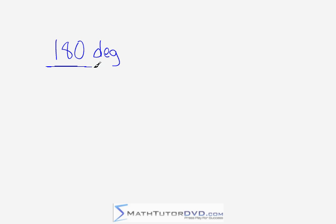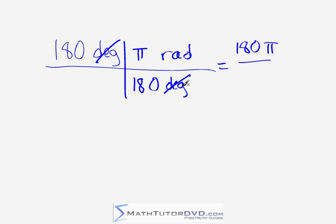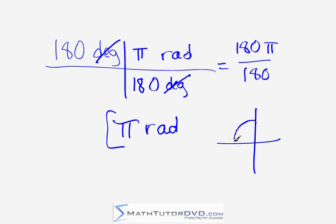Now let's do a couple of quick examples. Let's look at 180 degrees. At this point it becomes quite mechanical — to convert degrees to radians, we just apply the conversion factor. Using 180 degrees equals π radians: degrees cancels with degrees, and we multiply 180 times π on top divided by 180 on the bottom. 180 divided by 180, they go away, so we're left with π. Therefore 180 degrees equals π radians — exactly what you already know from the unit circle, where 180 degrees corresponds to π radians.